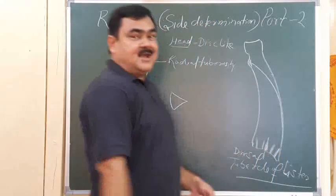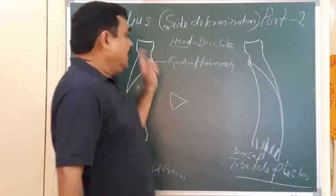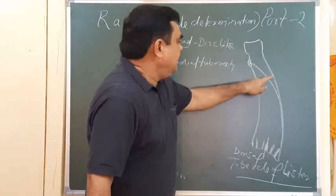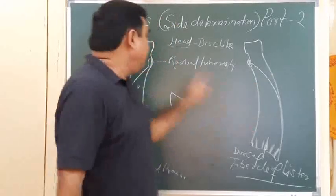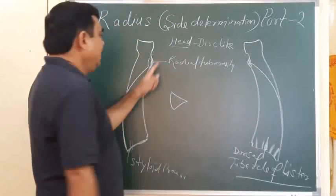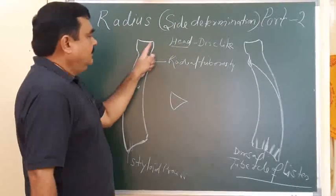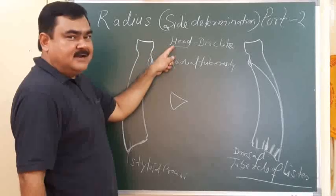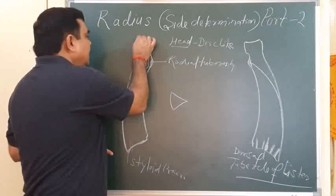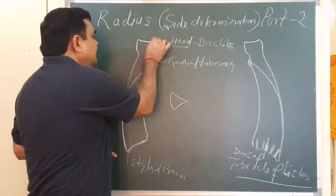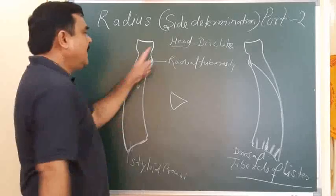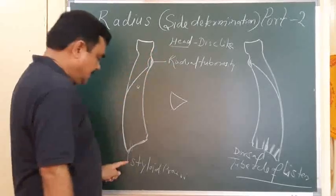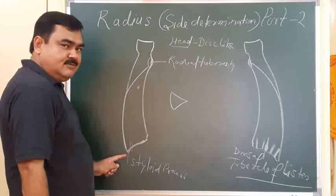Now, side determination of the radius. The side can be easily determined by keeping in mind the position of the head — it is directed upward and is disc-like. Another feature is the styloid process, which is a projection on the lower end.